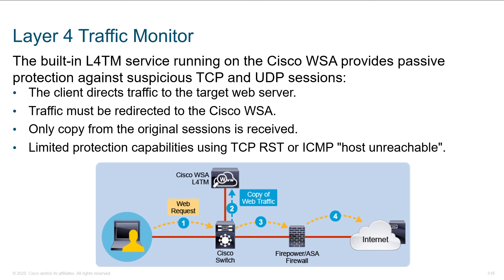L4TM — layer four traffic monitor — is a service running on the WSA that provides passive protection against suspicious TCP and UDP sessions. When leveraging L4TM, traffic is redirected to the WSA but only a copy from the original session is received, which gives us limited protection. In order to get traffic into the WSA, we've got to statically configure it — if we're not pushing it there, it never gets a chance. As the packet comes into the switch, a copy of the traffic goes to L4TM but the rest keeps going. The response doesn't necessarily come back through us, so to tear a session down we can use TCP resets or generate ICMP host unreachables.